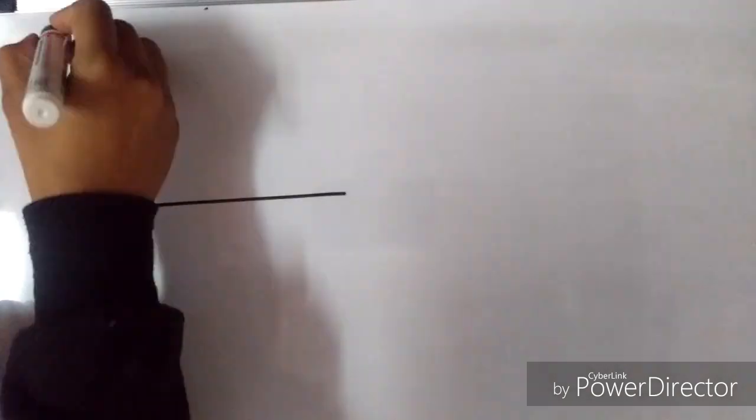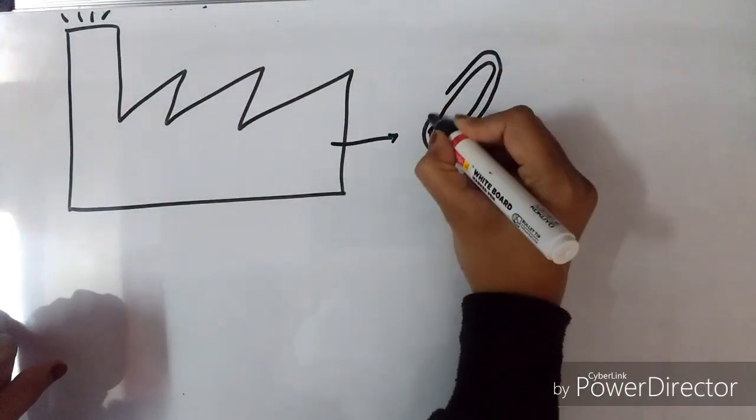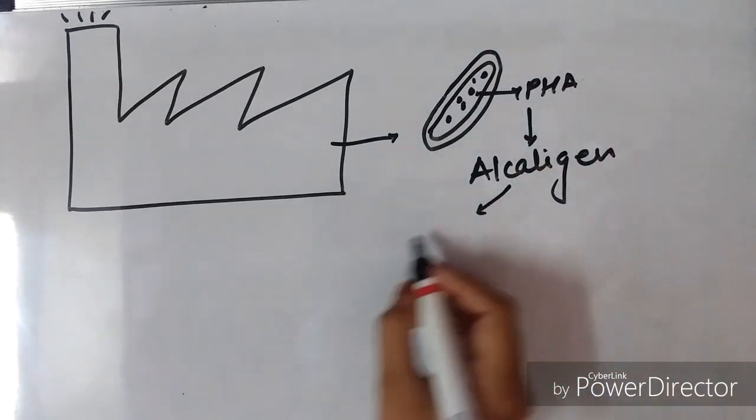On an industrial scale, PHA is produced using alkalogens. The alkalogens are gram-negative aerobic rods.